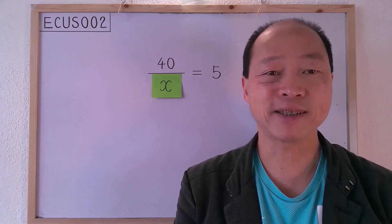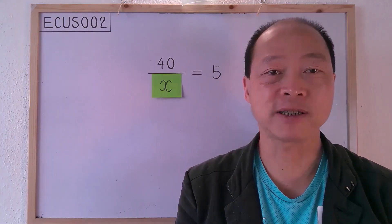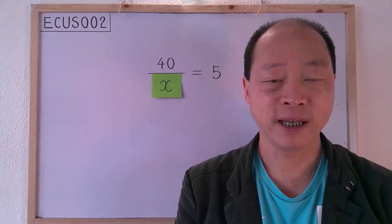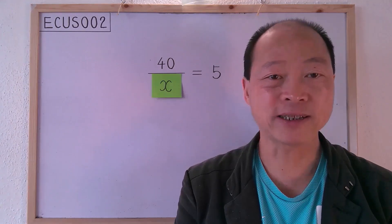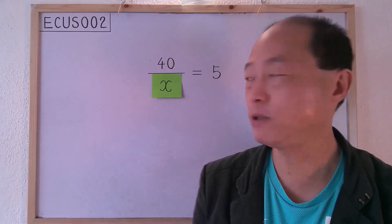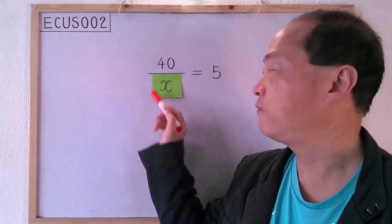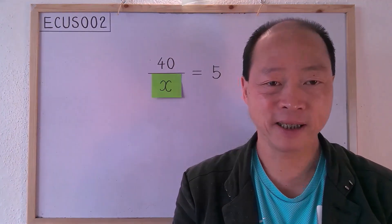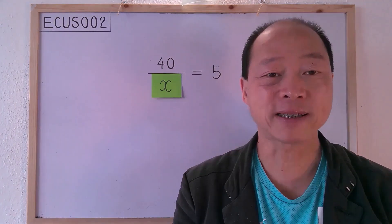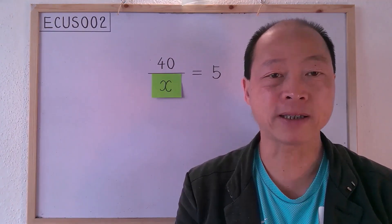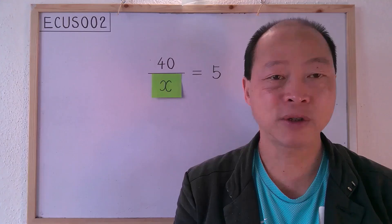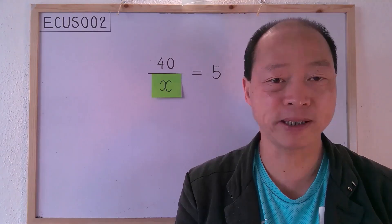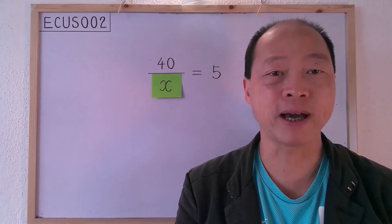Before we start, let's first discuss what's meant by the value of x. Actually, there's a number behind the piece of paper on which we write the letter x. When we say x, we refer to the number behind it. Literally, we use the letter x to represent the number behind it.